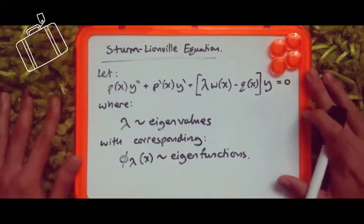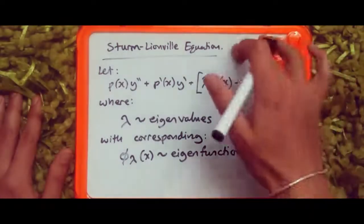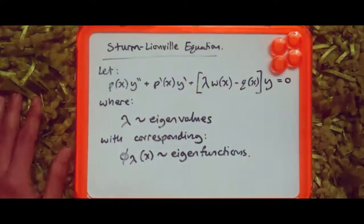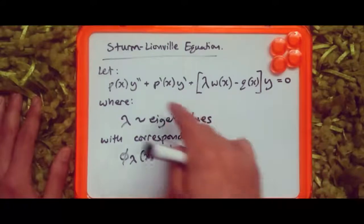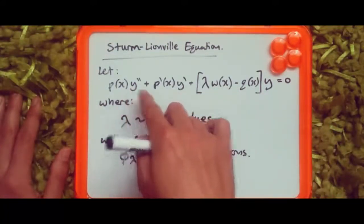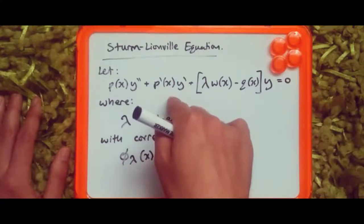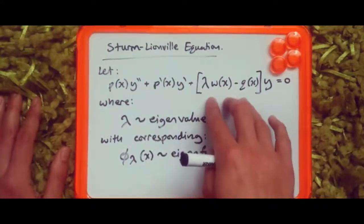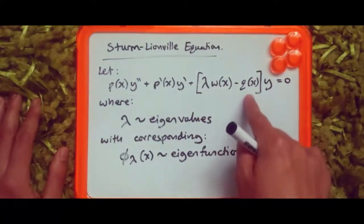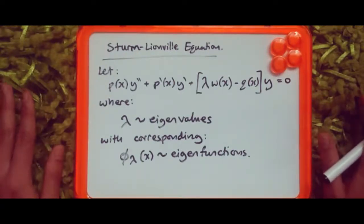Welcome back to another second-order ODE. Here we'll be checking out how to find the eigenvalues and eigenfunctions within a Sturm-Liouville equation. Sturm-Liouville equations always take a specific form: you have the second derivative of a function plus the first-order derivative term. The most important part is lambda, which is the eigenvalue, and there's also a weight function and Q(x).